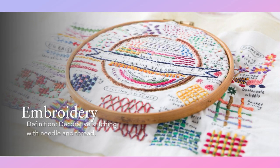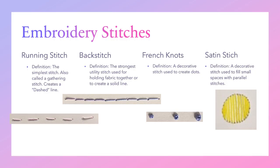Embroidery is decorative stitching with a needle and thread. Stitches we learned include: the running stitch, the simplest stitch, also called a gathering stitch, which creates a dashed line; the backstitch, the strongest utility stitch used for holding fabric together or creating a solid line; French knots, a decorative stitch used to create dots; and the satin stitch, a decorative stitch used to fill small spaces with parallel stitches.